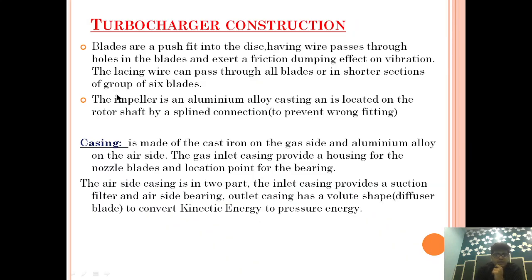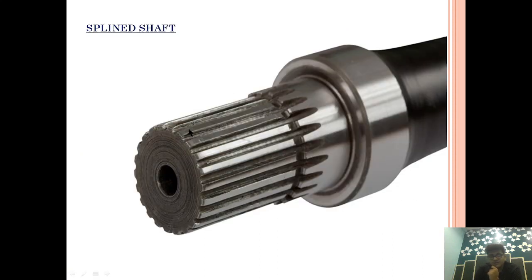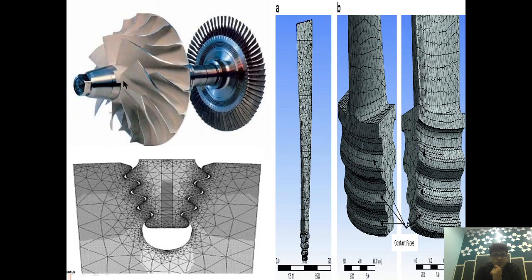The impeller is an aluminium alloy casting and is located on the rotor shaft by a spline connection. The spline shaft is provided so that the compressor rotor is fitted correctly to prevent misalignment. The rotor of the compressor is fitted on this spline shaft so that the compressor is correctly aligned.